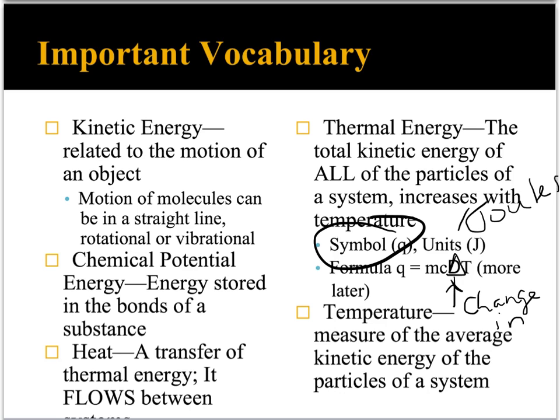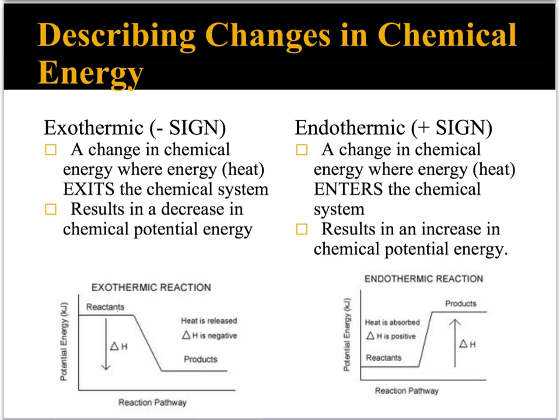The last term we need to talk about is temperature. What temperature actually measures is the average kinetic energies of the particles of a system at a given moment in time. When chemists talk about describing changes in energy, they use the terms exothermic and endothermic.